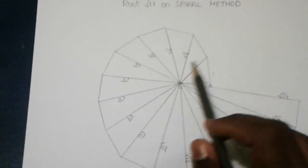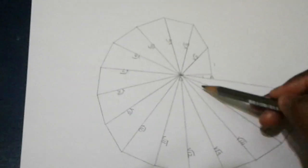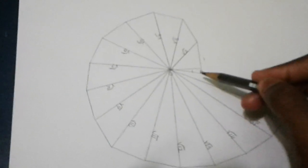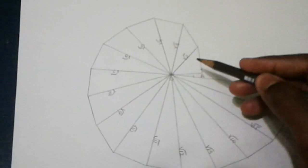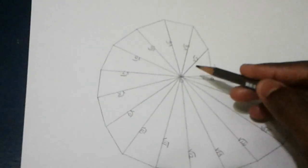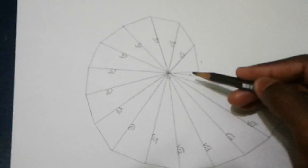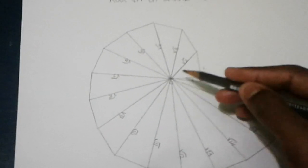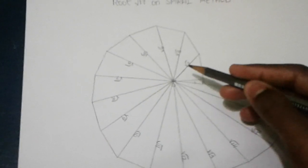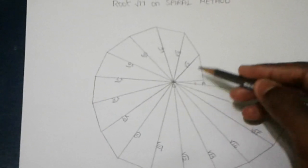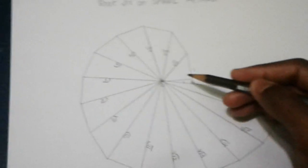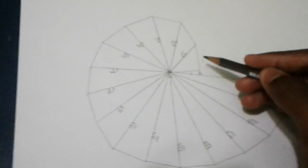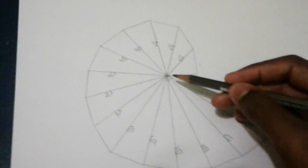Draw one unit perpendicular and join this line. This is the hypotenuse of this triangle. We know the Pythagoras theorem: 1 square plus 1 square equals root 2. So we have found root 2. From this line, we should draw another line which is one unit.